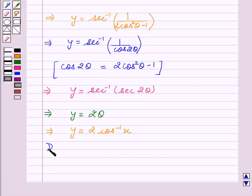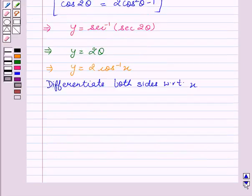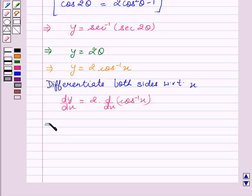Now differentiate both sides with respect to x. We get dy/dx equal to 2 times the derivative of cos inverse x. This implies dy/dx equal to 2 times minus 1 over square root of 1 minus x squared.